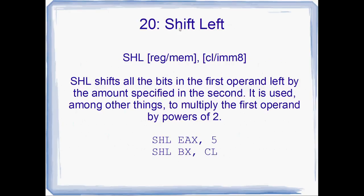Coming in at spot number 20: shift left. This is a really important instruction. SHL is the mnemonic. It shifts all of the bits of the first operand left by the amount specified in the second. That second operand can either be an immediate 8-bit value, or it can be CL. So if you want to shift left by a variable amount, you've got to use the CL register. Shift left is really commonly used to multiply an operand by powers of 2. Shift left EAX by x bits is the same as saying multiply EAX by 2 to the power of x. For instance, to multiply by 2 to the power of 5, you'd do SHL EAX, 5.